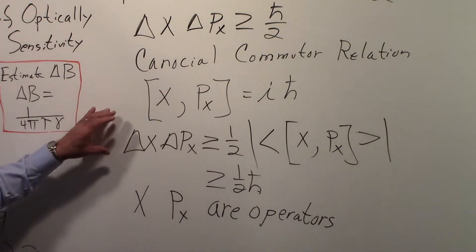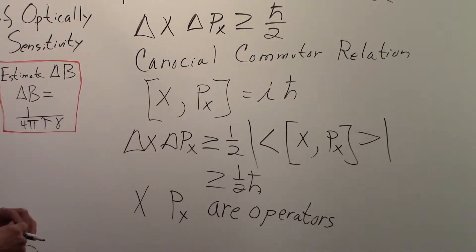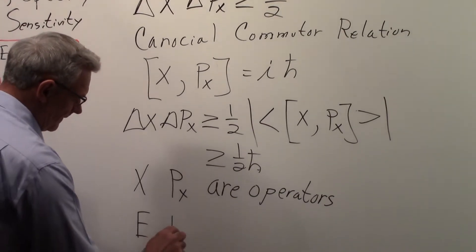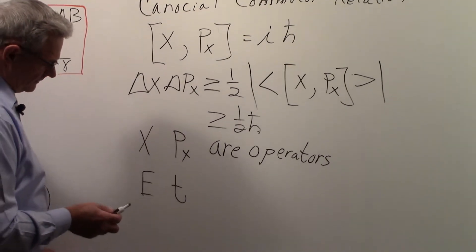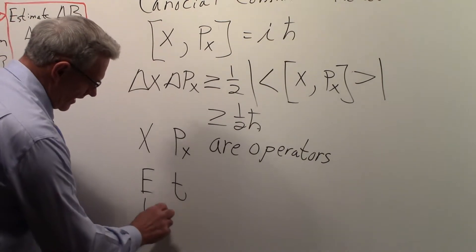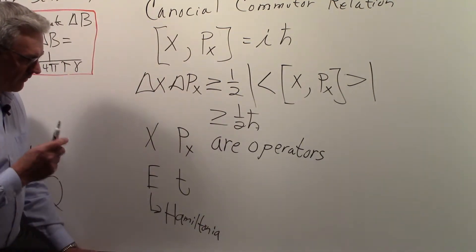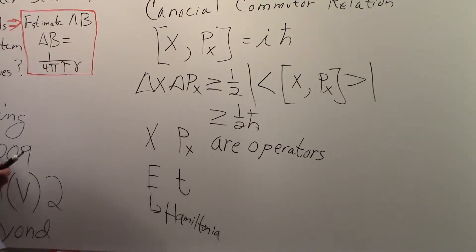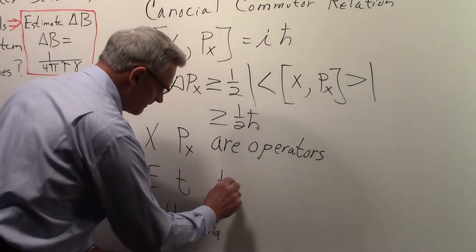In Heisenberg uncertainty relationships these quantities represent operators. When we go to ΔE · Δt, we have energy and time — and we ask: what are the operators? The energy has the operator: the Hamiltonian. But what is the operator for time? That's where some of the issues pop up — time is a parameter.